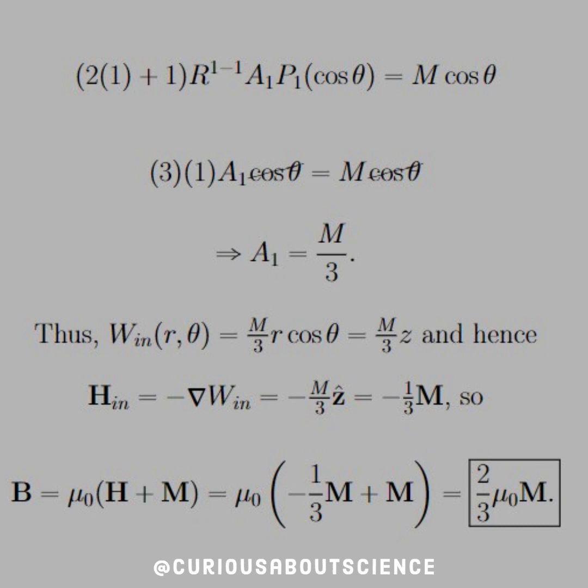Thus, we know what the potential inside needs to be, and therefore, we can solve for the H of the inside via the divergence. And we see that we get negative one-third M. So B is equal to mu not H plus M, which is the exact result we found using another method. Nice to see the consistency once again.